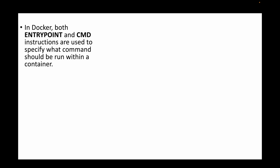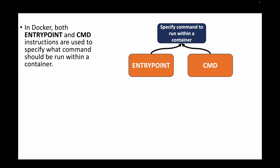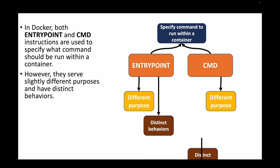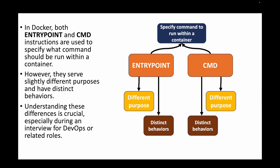Both ENTRYPOINT and CMD instructions are basically used to specify the commands that you want to execute whenever we are starting a container. We can pass both of these instructions in a Dockerfile to specify any command we want to execute when the container is starting — for example, starting a service or running a process. However, they serve slightly different purposes and have very distinct behaviors when used together or individually.